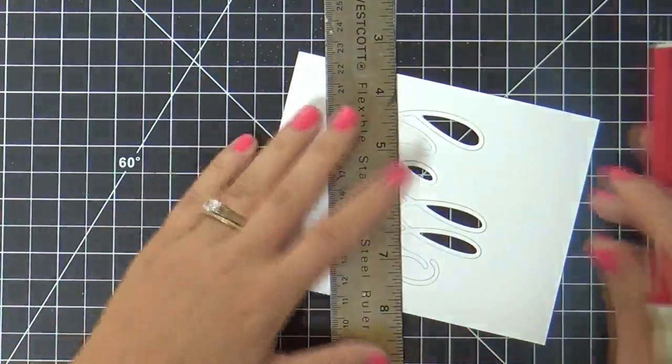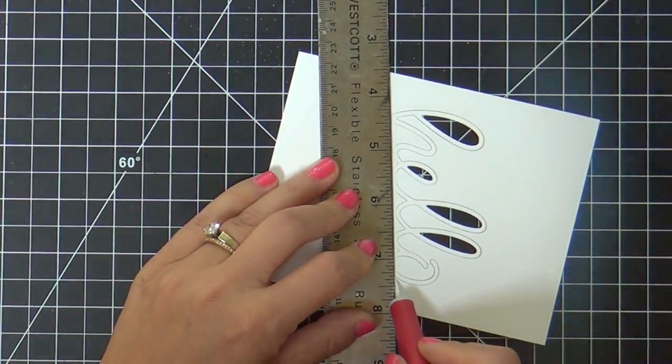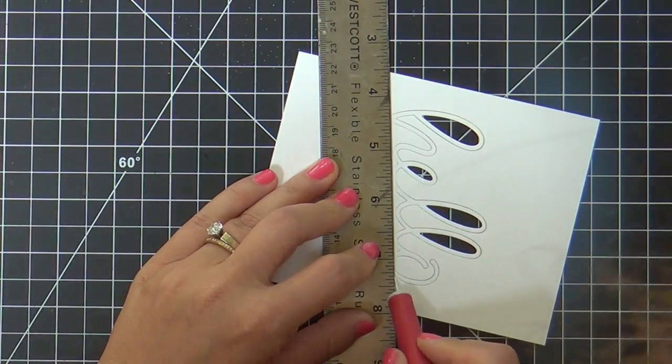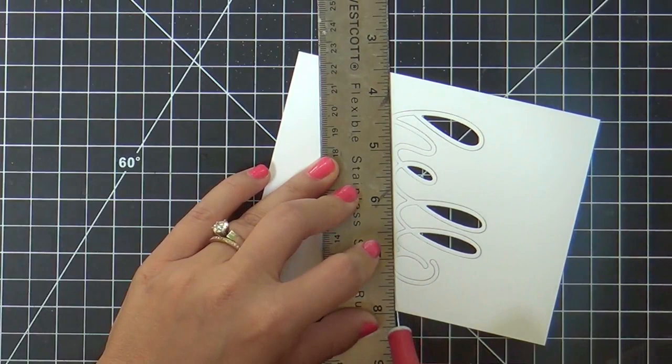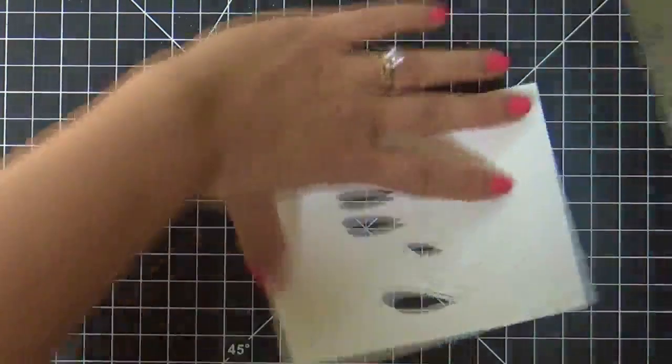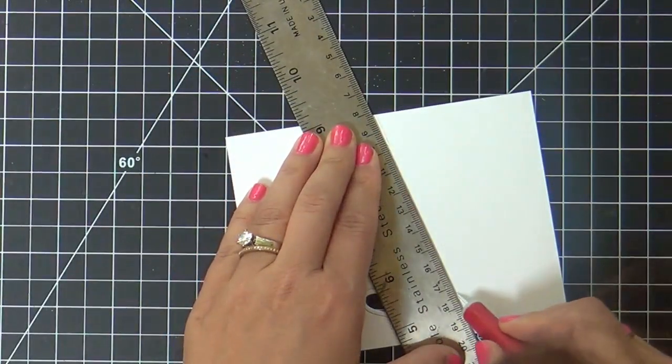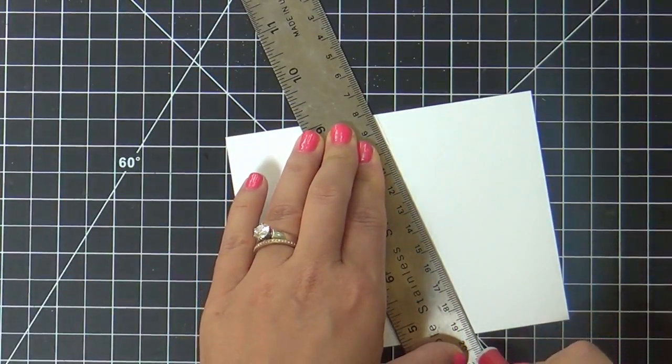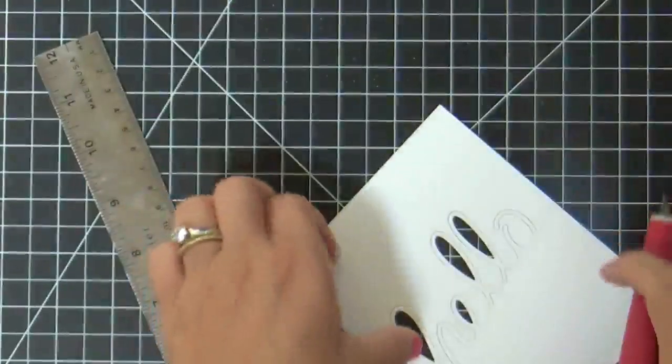Now here you have to do a little bit of fussy cutting or as I like to call it card surgery. This is where it comes in real handy all those episodes of Grey's Anatomy. You feel like you're a surgeon. You got a nice steady hand with the craft knife. I'm kidding.